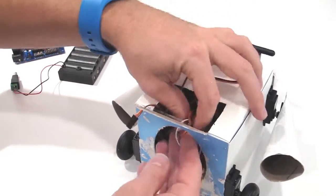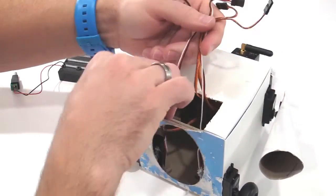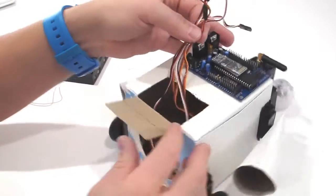Pull the servo cables through the trapdoor. Place the EasyB on your robot.